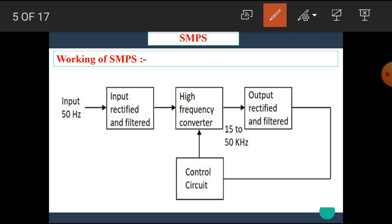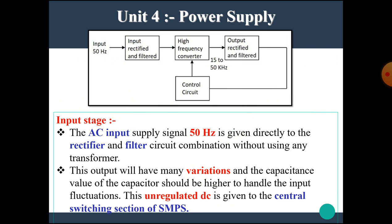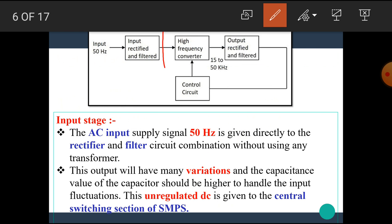In this block diagram, we can see that there are a number of blocks such as input rectifier and filter, high frequency converter for switching purpose, output rectifier and filter, and the control circuit. We get the output of the SMPS here, and the control circuit is used in the feedback path. The AC input supply signal of 50 Hz is given directly to the rectifier and filter circuit combination without using any transformer.